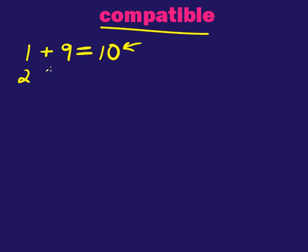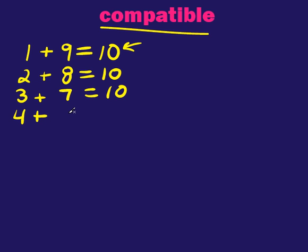2 plus 8. Those are compatible. They give you 10. 3 plus 7 gives you 10. 4 plus 6. Are you seeing a pattern here at all?